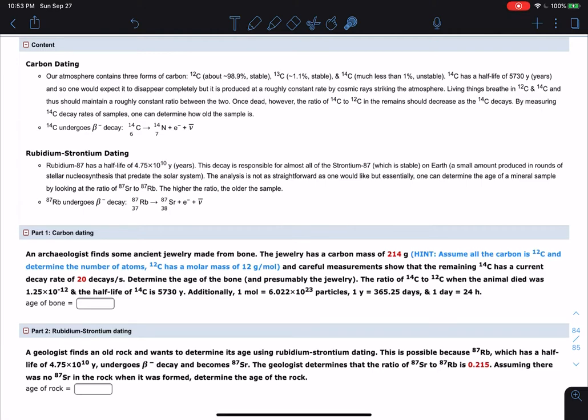Now, to solve this, there's this hint here. Assume all the carbon is carbon-12, and determine the number of atoms. And it tells you that C12 has a molar mass of 12 grams per mole. So this is an approximation, because not all of it, there's a decay rate. So obviously, some of it is C14.